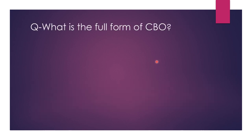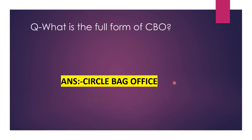Next question. What is the full form of CBO? The answer is central back office. UBO stands for unit back office. DBO stands for district back office. And CBO stands for circle back office.